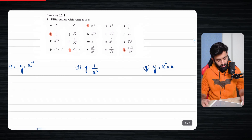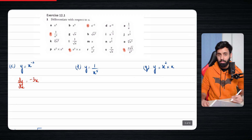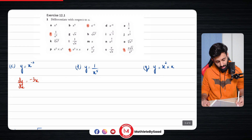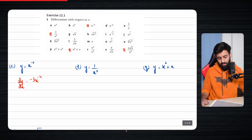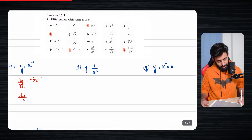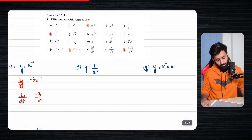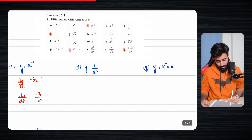Part c is x to the power of negative 3. Let's differentiate this. Minus 3 gets multiplied by the coefficient of x, which is 1 in this case, and then you take 1 further away from the power, so that becomes minus 4. I don't like leaving a power as negative, so I'm going to write it as minus 3 upon x to the power 4. It's just a personal preference.